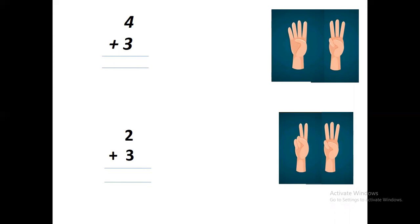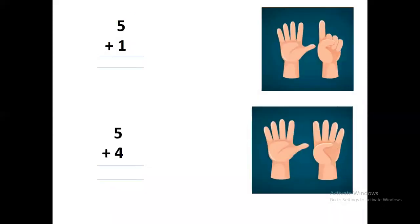One, two, three, four — so the answer is seven. On one hand you have to open four fingers, and on the other hand you have to open three fingers. Let's count all together: one, two, three, four, five, six, seven. The answer is seven! Next sum is five plus one.